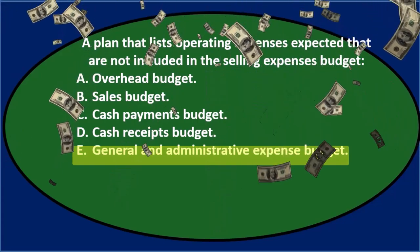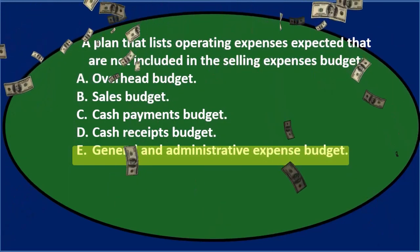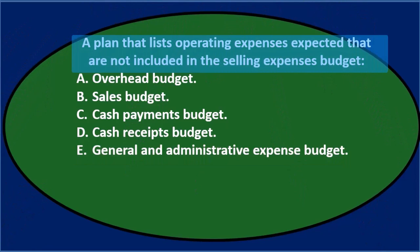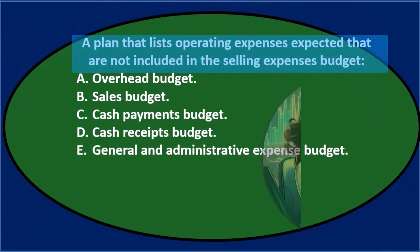Let's go through this again using the process of elimination. A plan that lists operating expenses expected that are not included in the selling and administrative expenses budget. We can see we have operating expenses, and operating expenses — if we think about a multi-step income statement — we typically think of selling and administrative type expenses as the operating expenses. And then they eliminated the selling expenses.